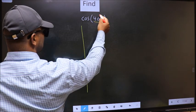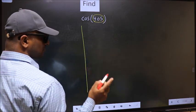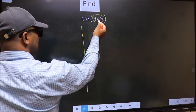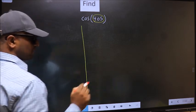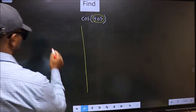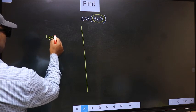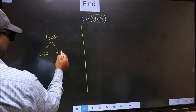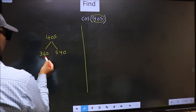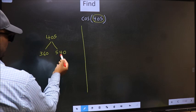Here we have 405. Now you should check. 405 lies between which two multiples of 180? What I mean is, 405 lies between 360 and 540. This is 180 times 2. This is 180 times 3.